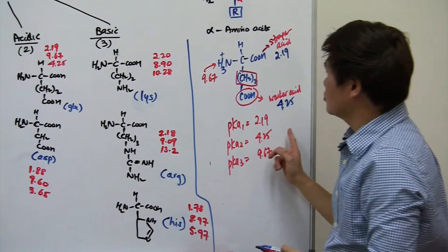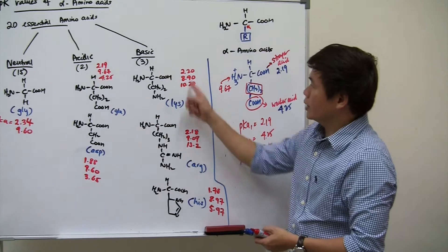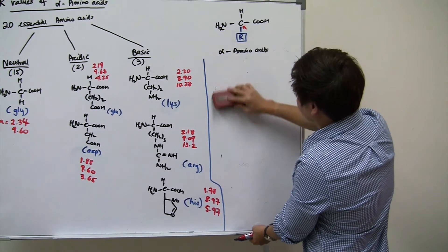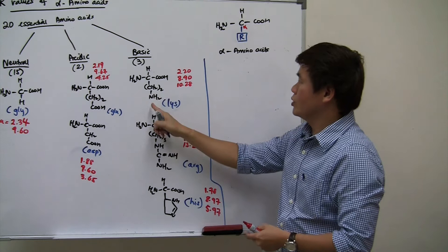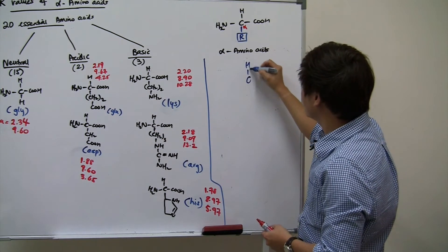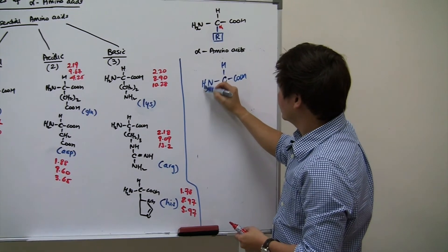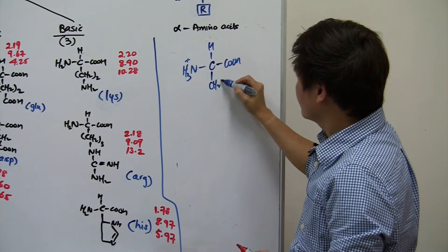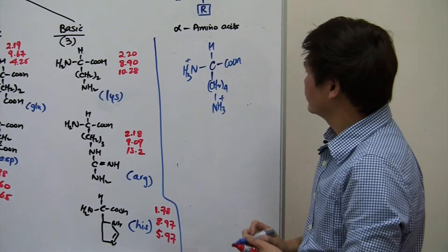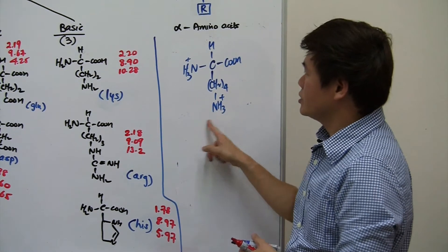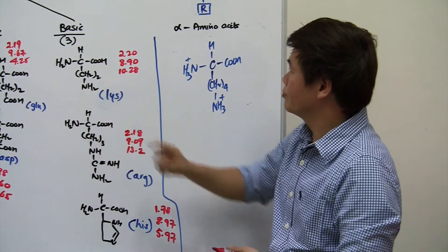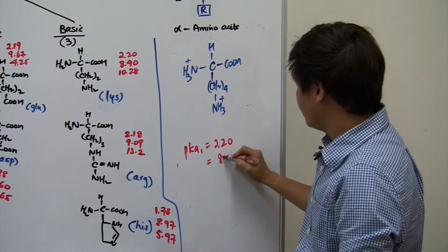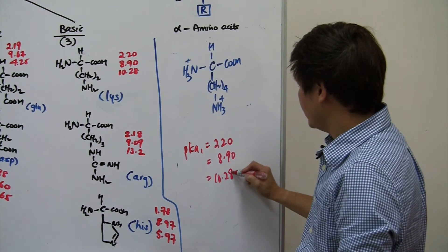Assigning pKa values for aspartic acid follows exactly the same approach as glutamic acid. Now let's look at a basic amino acid — lysine. For basic amino acids, we draw both amines in their protonated form. Lysine contains two nitrogen groups: one in the main chain and one in the R group. The three pKa values for lysine are 2.2, 8.9, and 10.28.